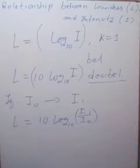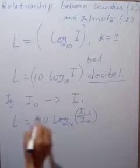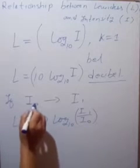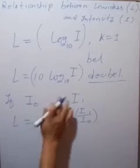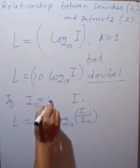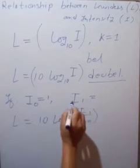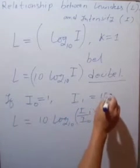And unit is decibel. If I0 or initial or first condition of intensity is 1. Suppose this is equal to 1. And second condition I1 equal to 100.